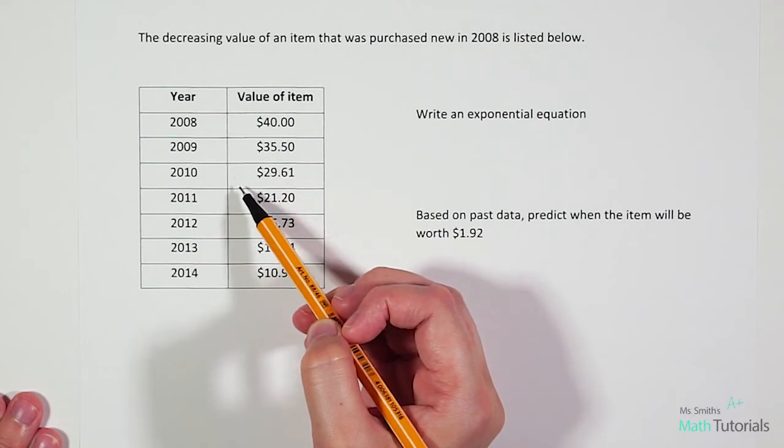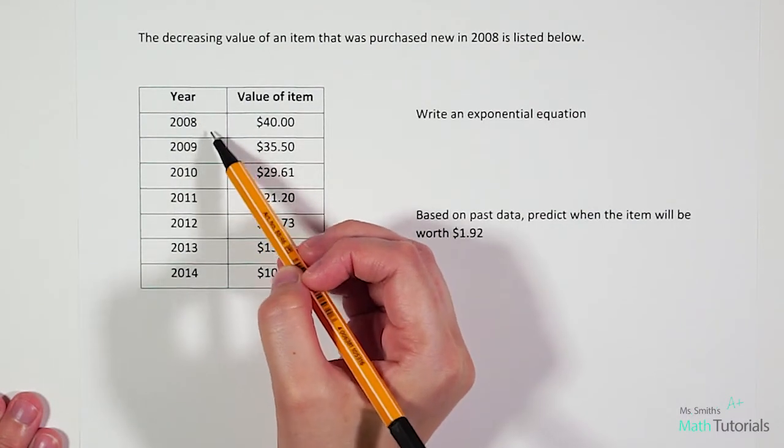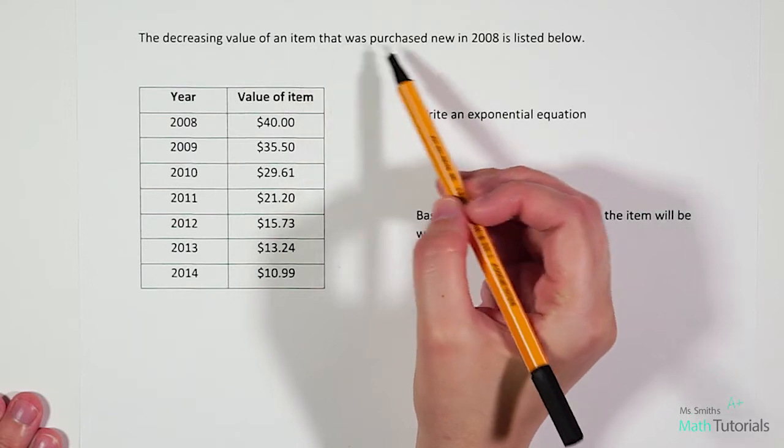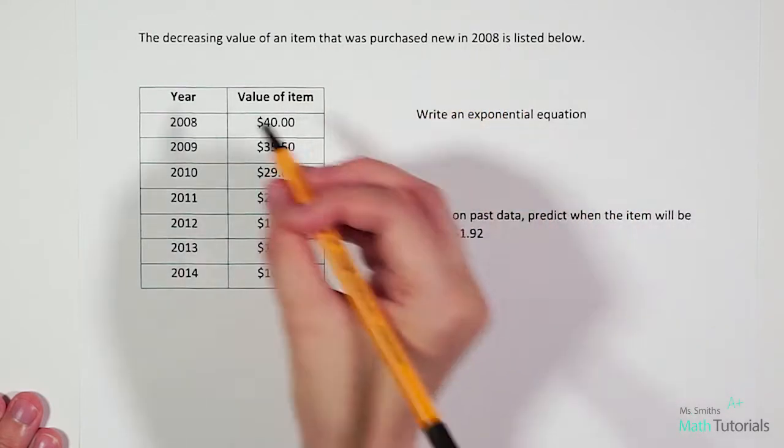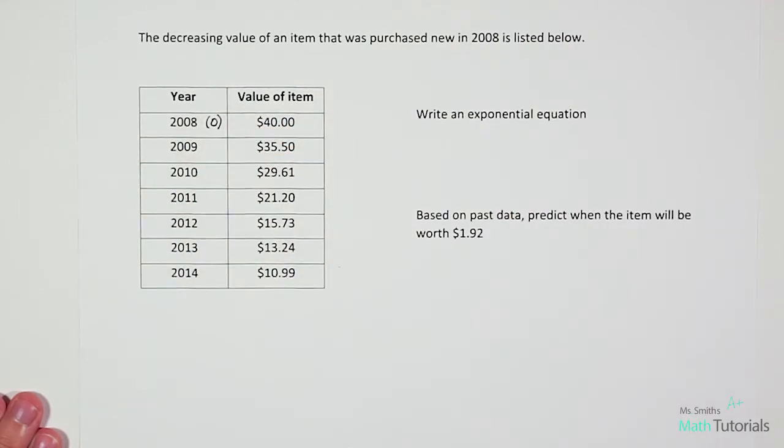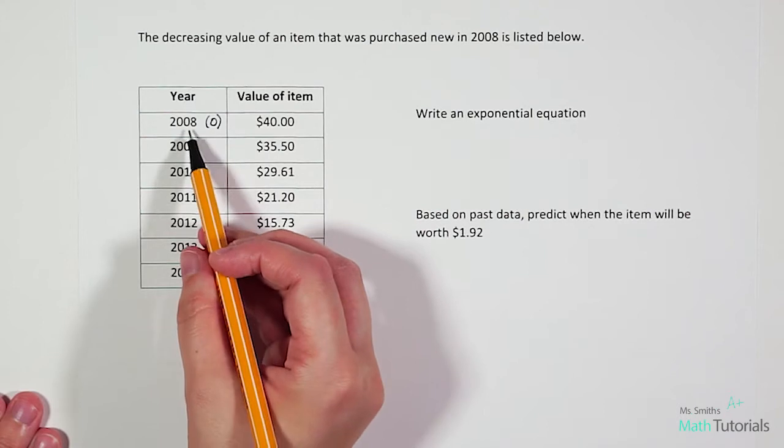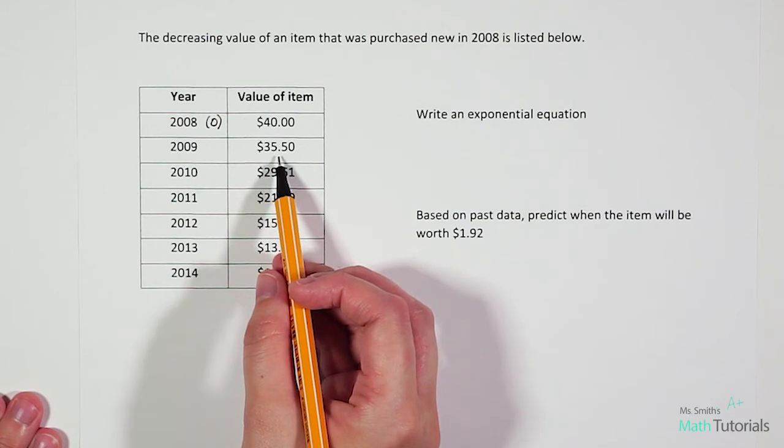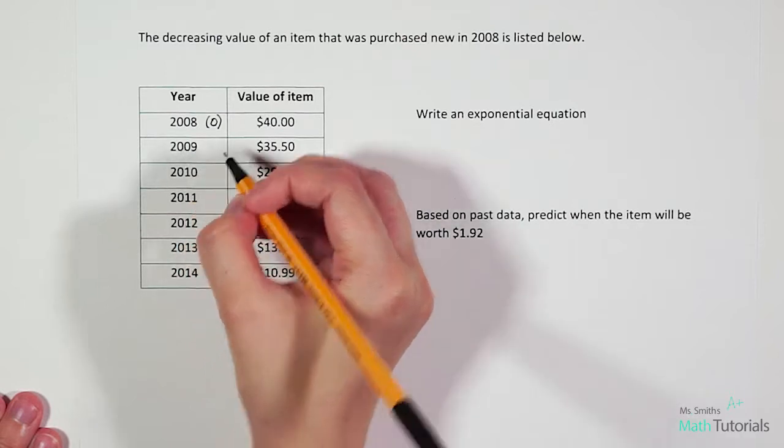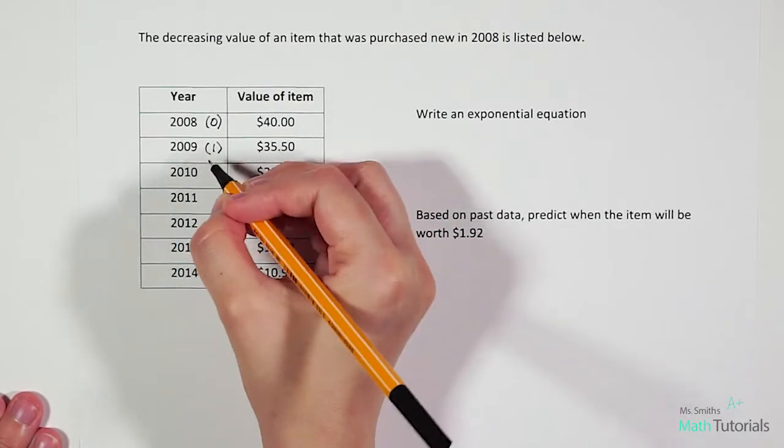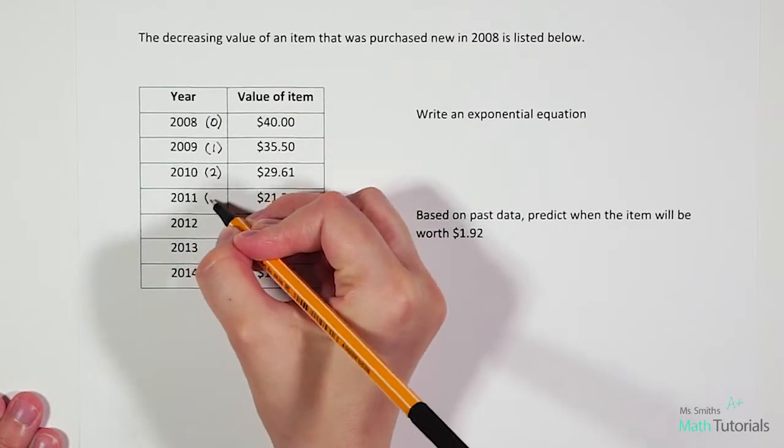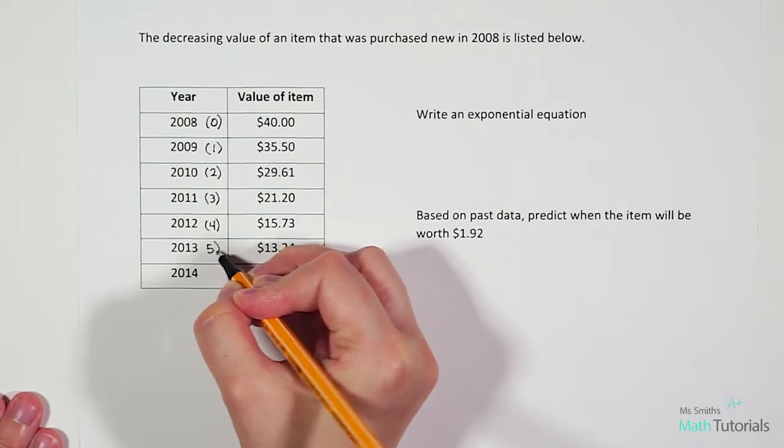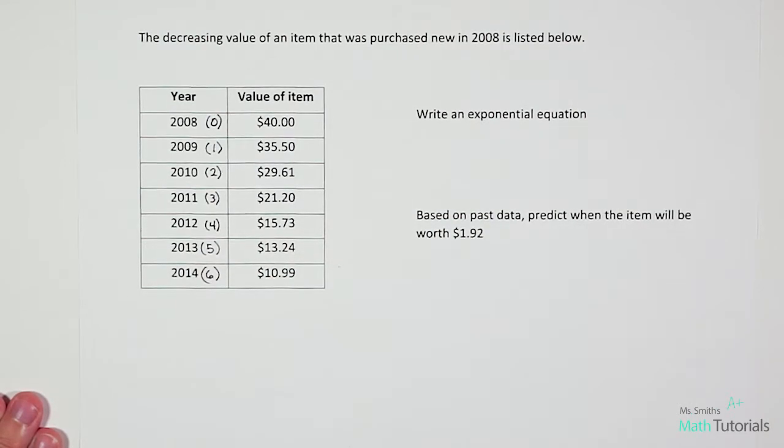We need to put our data into the calculator. But before we do that, we need to figure out our year numbers to be able to list them in the calculator. Now as it mentioned in the problem, this item was purchased new in 2008, so 2008 is going to be our year zero. What I like about this problem is you'll notice that each of these years are in chronological order, so they've just collected this data information, the value of the item every single year. So 2009 would be year one, 2010 would be year two, 2011 would be year three, 2012 would be year four, 2013 would be year five, and 2014 would be year six.